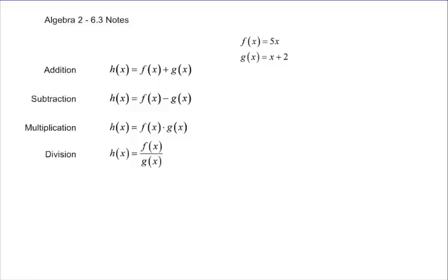Here are the rules for working through polynomials — we're going to add these guys up. These are the different steps you can take: you can add one polynomial to another, you can subtract a polynomial from another, you can multiply them together, and you can divide them. Now when you divide, pay attention because in this case, g of x cannot equal zero.